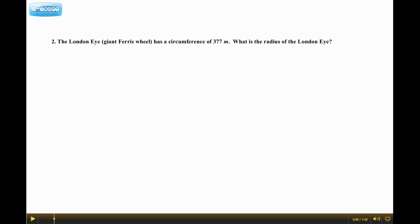Alright, question number two. The London Eye, which is just a giant Ferris wheel, has a circumference of 377 meters. What is the radius of the London Eye? So I'm just going to draw a circle. It's meant to model the Ferris wheel. It's not very good. That's okay.